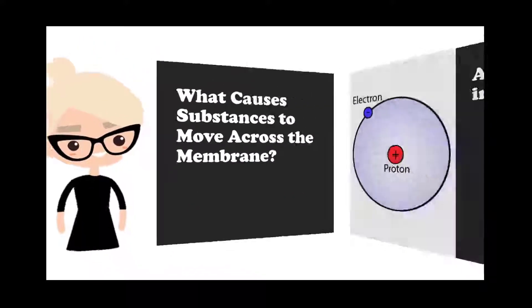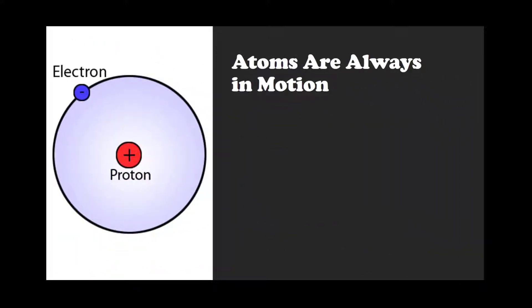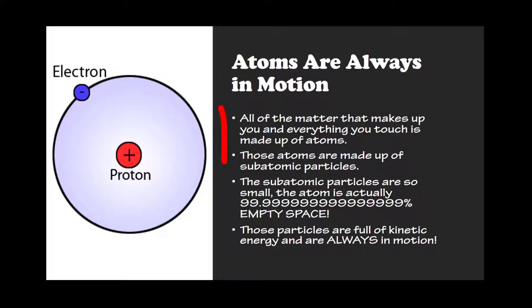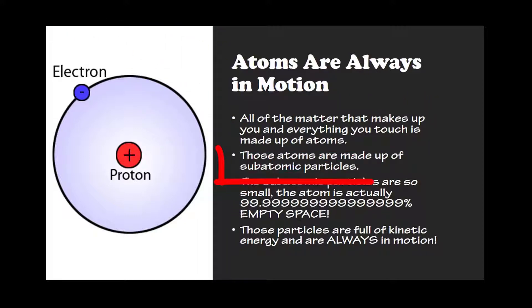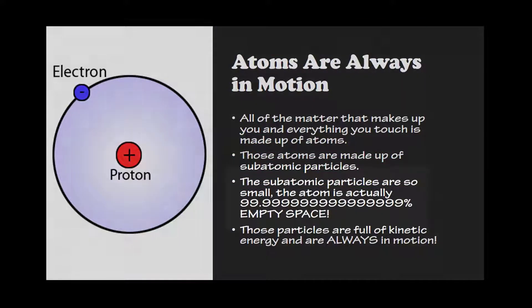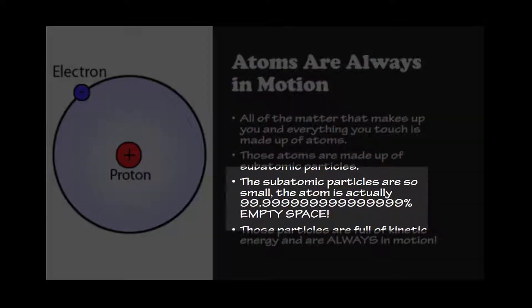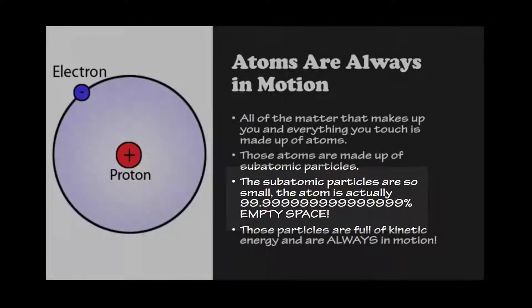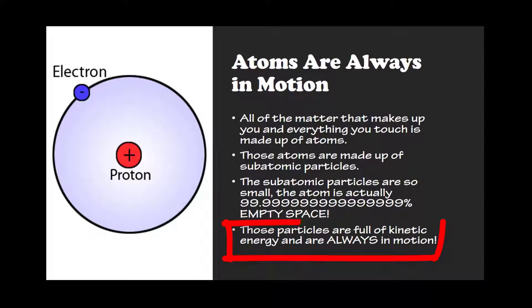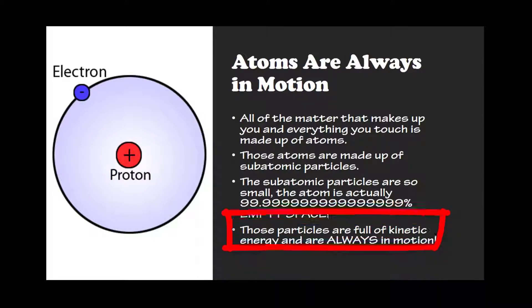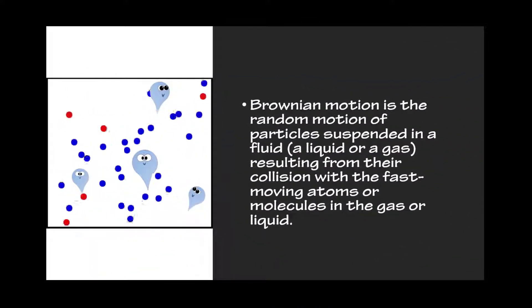What causes substances to move across the cell membrane? Atoms are always in motion. All of the matter that makes up you and everything you touch is made up of atoms, and those atoms are made up of subatomic particles. The subatomic particles are so small that the atom is actually way more than 99% empty space. Those particles are full of kinetic energy and they are always in motion.